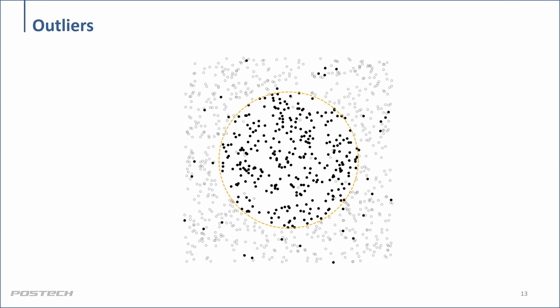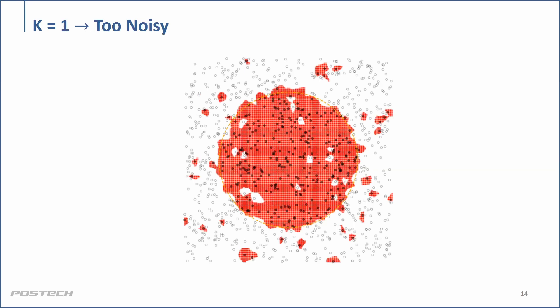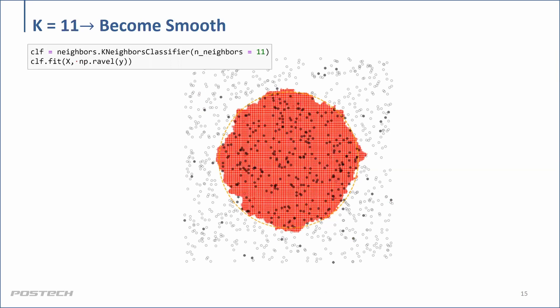It looks okay, but let's think about the case where we have outliers or noise. I intentionally assign some outliers outside — that's a more realistic case. If we use the KNN classifier with a small k, it's too noisy. To avoid this, we can increase the number of neighbors we consider. Even with outliers, taking 11 data points and doing majority voting makes it much, much smoother.